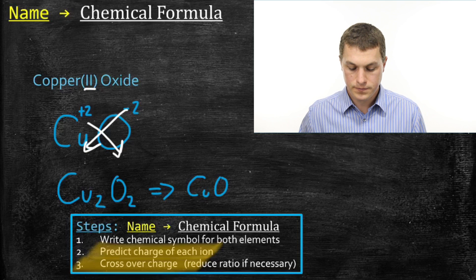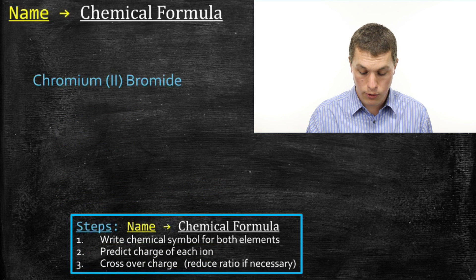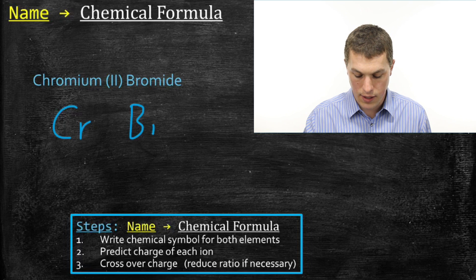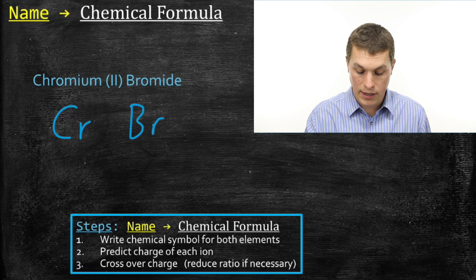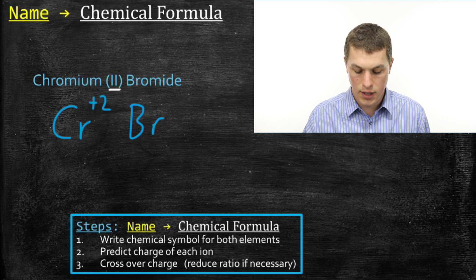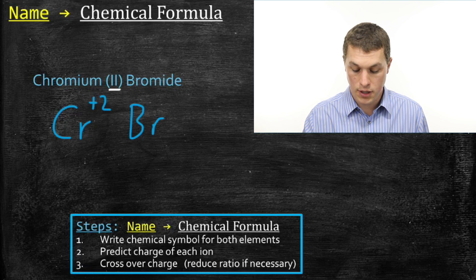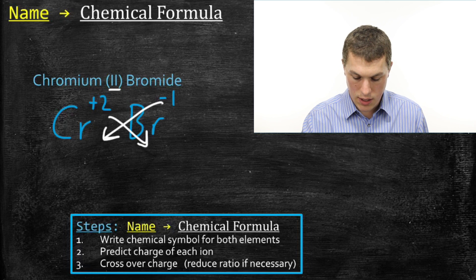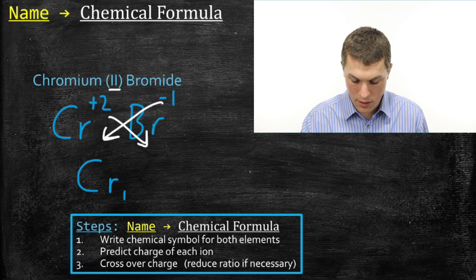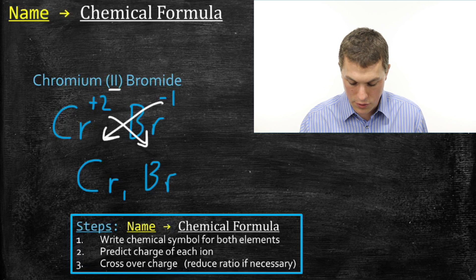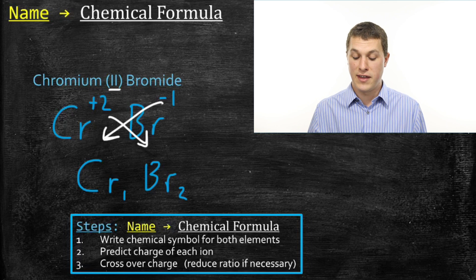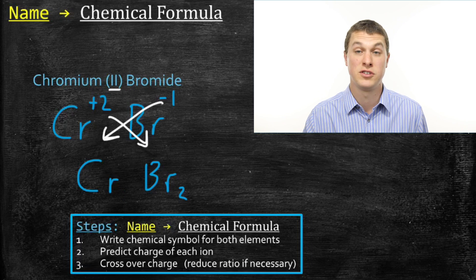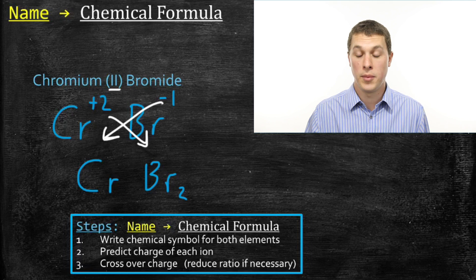Next example: chromium(II) bromide. We write down the symbol for each element — Cr for chromium and Br for bromide. We write down the charge on chromium, which we know is plus two from our Roman numeral. Bromine's charge based on its position on the periodic table is minus one. Then we cross over the charges, giving Cr with a subscript one and Br with a subscript two — so CrBr₂. We don't usually write the one, since we're assuming one chromium. That's how you write chromium(II) bromide.